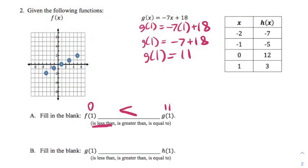Next we're asked to compare g(1) and h(1). Well, g(1) we already know is 11, and h(1), I'm going to look at this table. When the input is one, the output is three. Well, 11 is greater than three, so I'm going to put a greater than symbol, or I could write out the words is greater than.